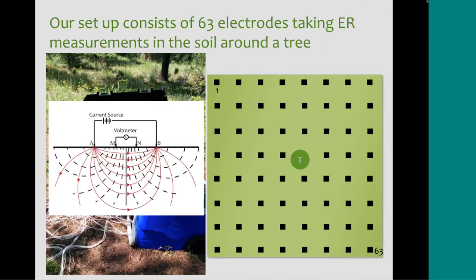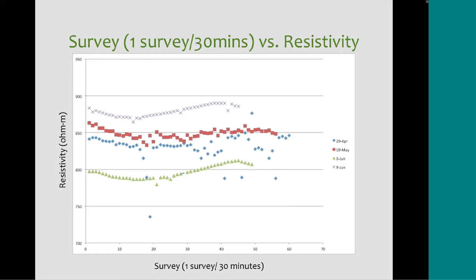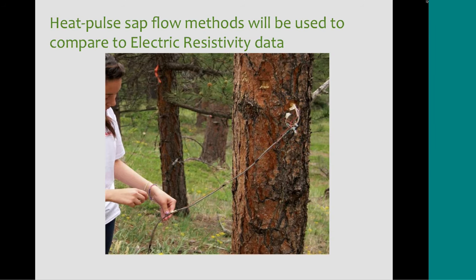The further away the electrodes are from each other, the deeper we can see into the soil. This is very raw data when we first downloaded from the Syscal Pro — we graph it to see if we can detect a diurnal signal. Here we can see it, though April 9th looks a bit erratic. We have the survey number on the x-axis and resistivity on the y-axis. Usually we start around 9 in the morning and run for about 30 hours each day. We also used a heat pulse method to track the sap flow in trees and relate that to the transpiration processes of the tree.